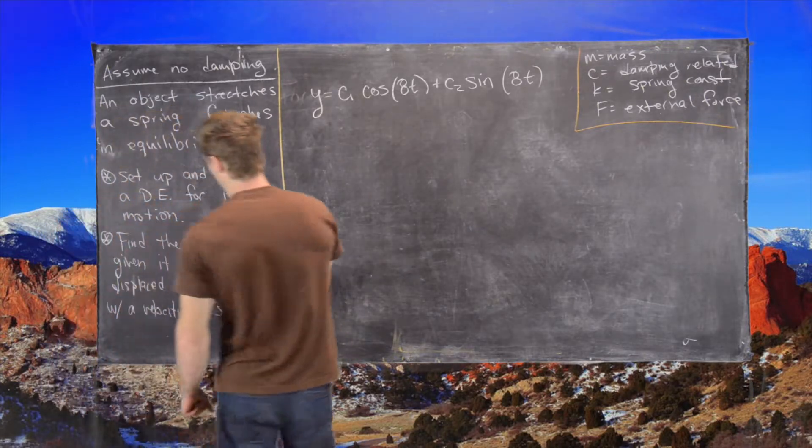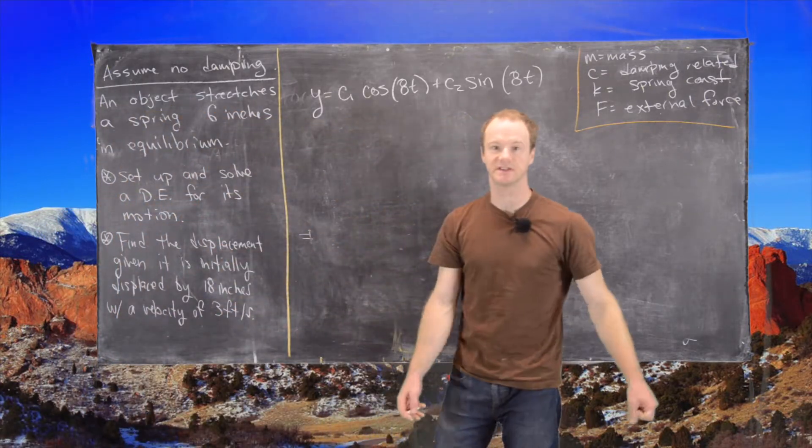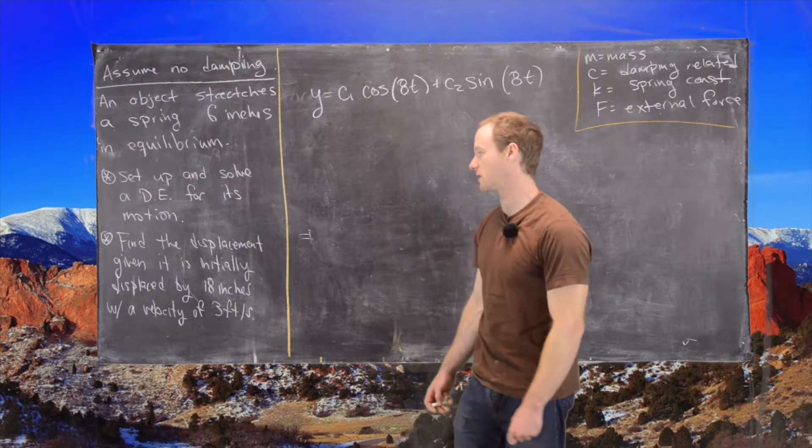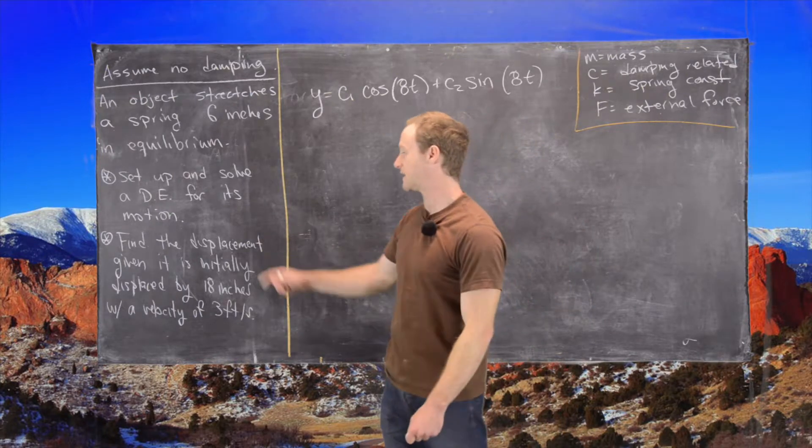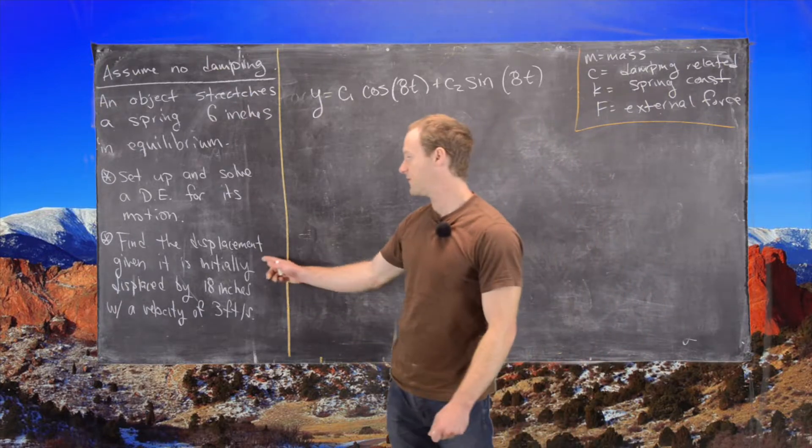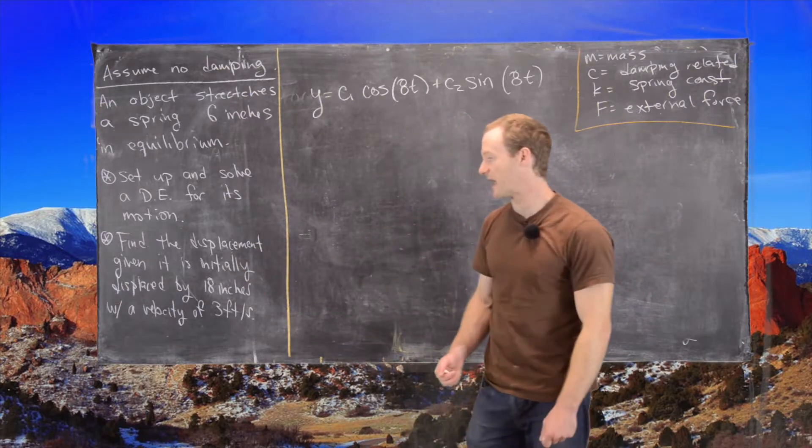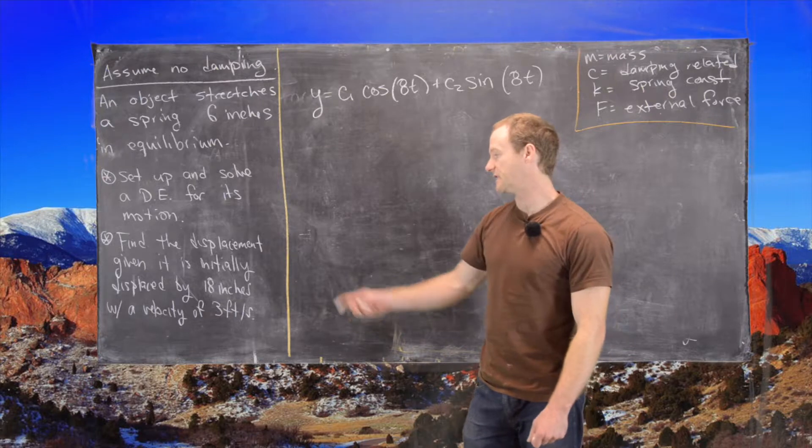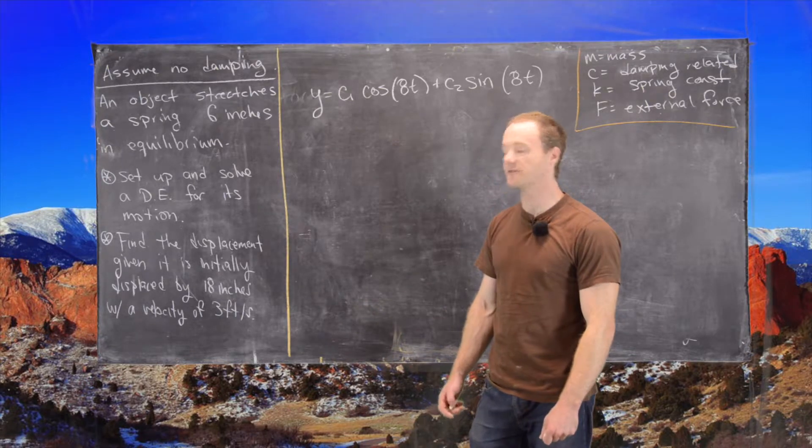Now we can look at the second bit of the problem and see if we can figure out what those constants are. So, find the displacement, so in other words find the function y, given that it is initially displaced by 18 inches, and its velocity is 3 feet per second.